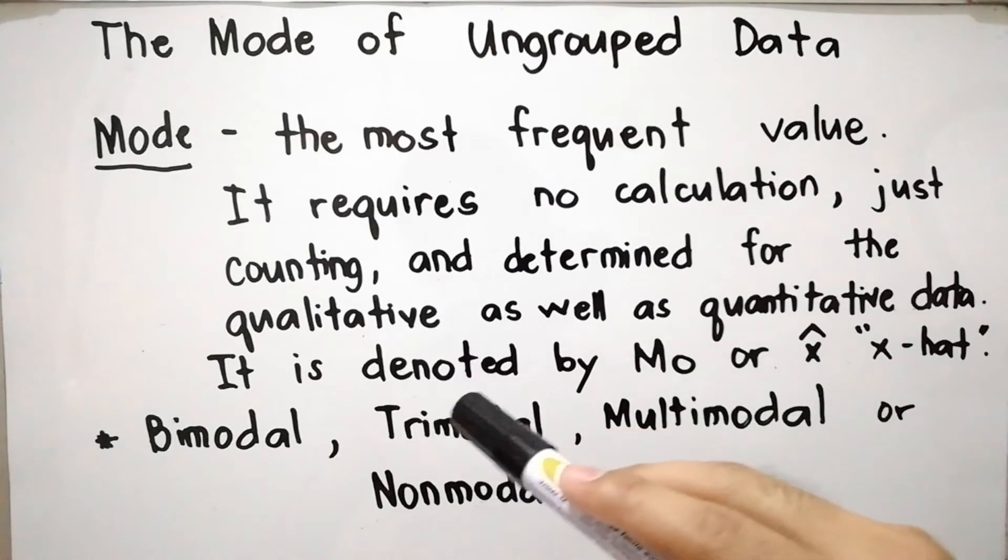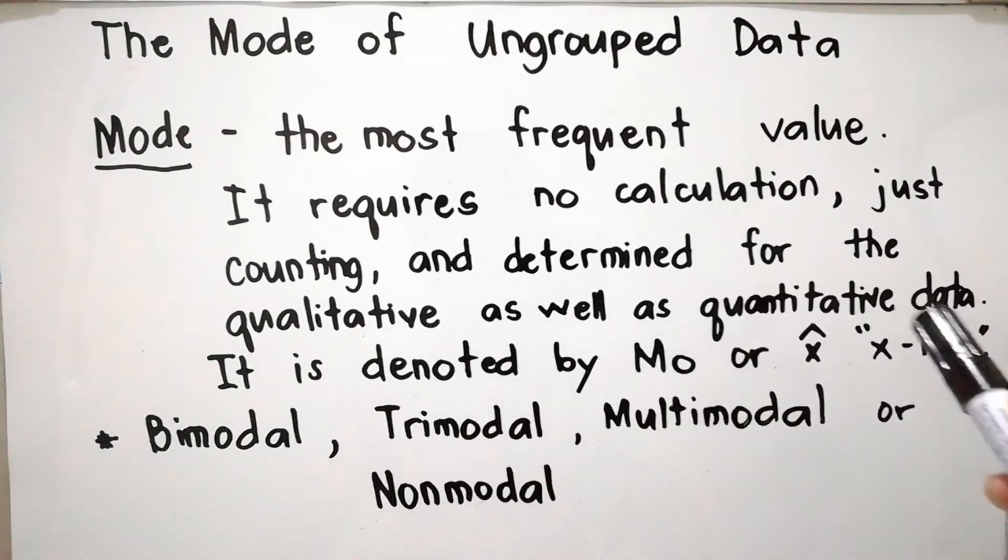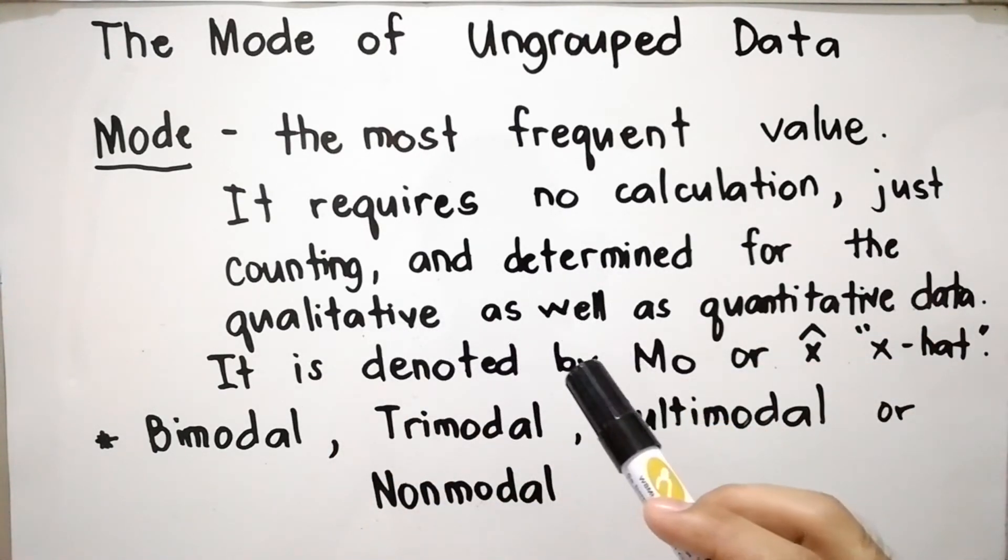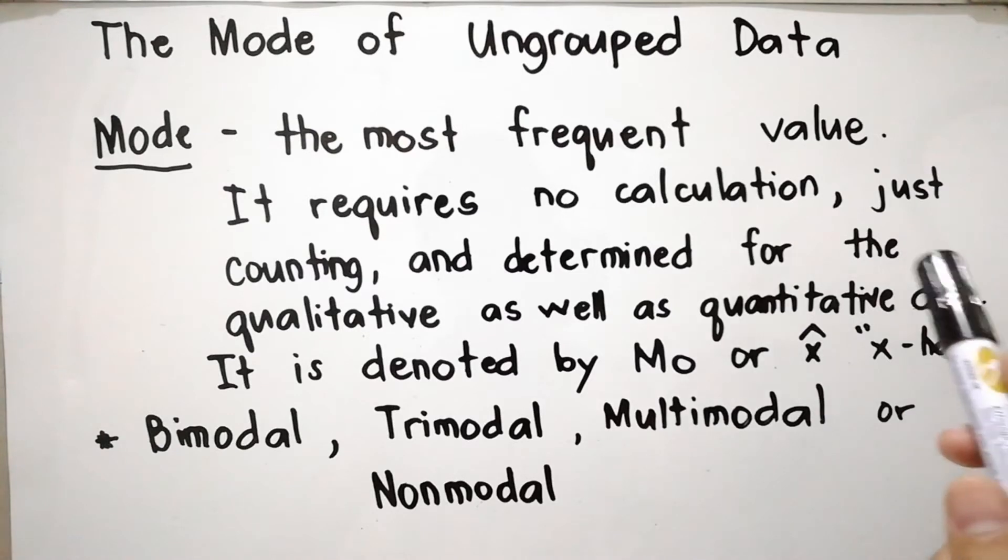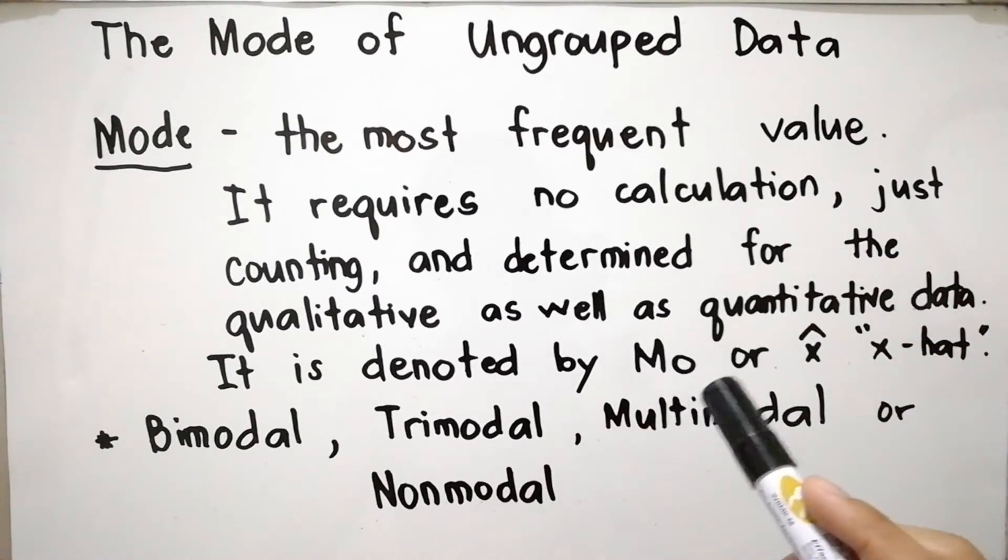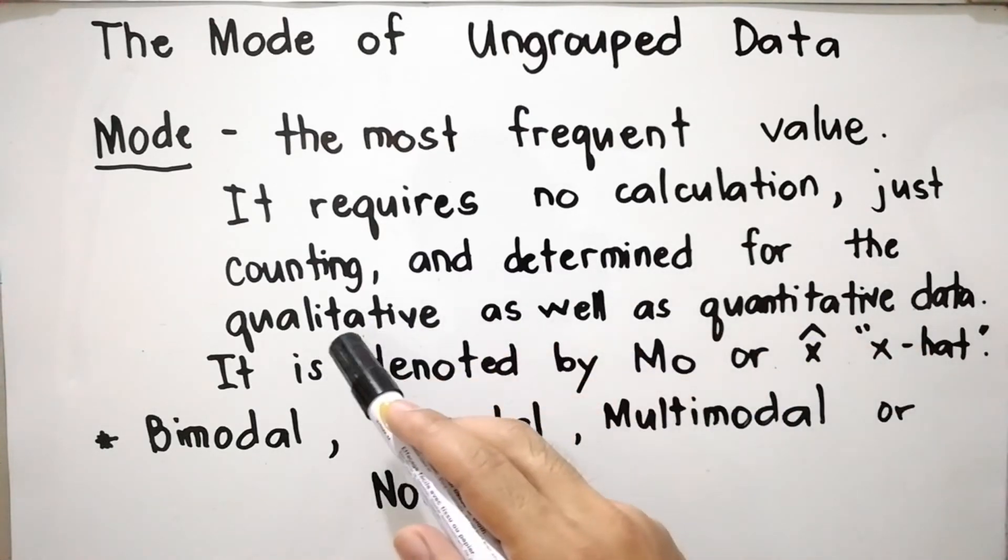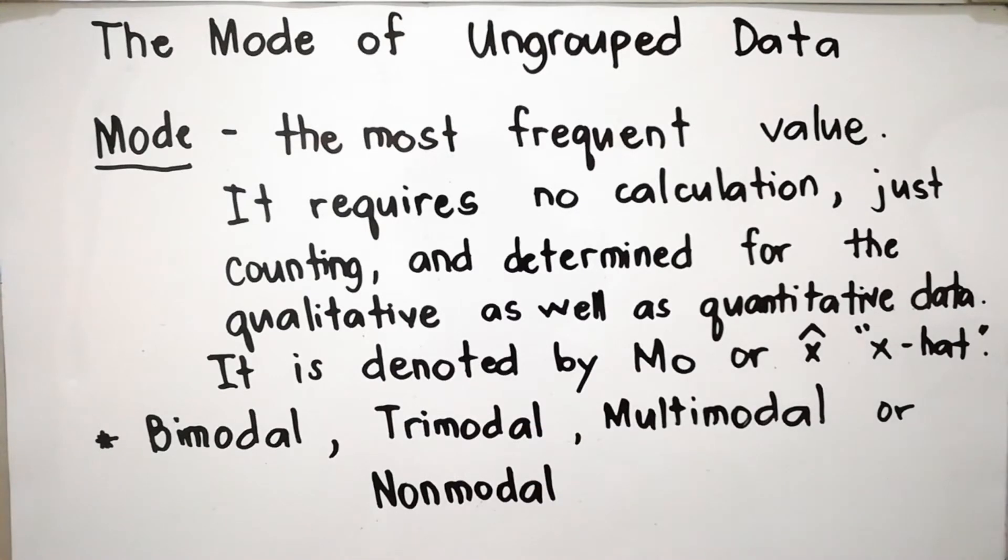The two main advantages of the mode are that it requires no calculation, just counting, and it can be determined for the qualitative as well as quantitative data. For example, for qualitative: most of the students are wearing white t-shirts. For quantitative data: most of the students are 16 years old. It talks about numbers and qualitative talks about describing the element.